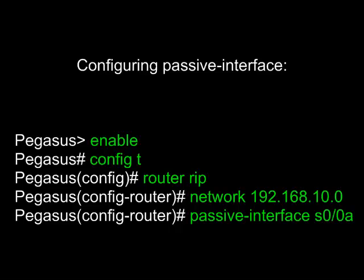Here's how to use the passive-interface command. From user mode, go to privilege mode with enable. From privilege mode, go to global configuration mode with config t. From global configuration mode, go to router configuration mode with router rip. Then simply specify passive-interface and the name of the interface you wish to make passive.